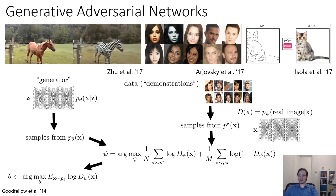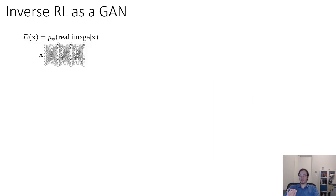The generator is trained to fool the discriminator — it's trained to produce images x for which the discriminator gives a high probability of them being real. This is very much like the inverse RL procedure outlined before. In fact, you can frame inverse RL as a kind of GAN.